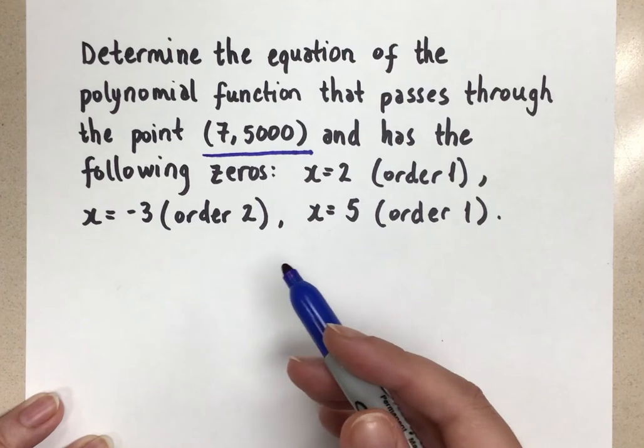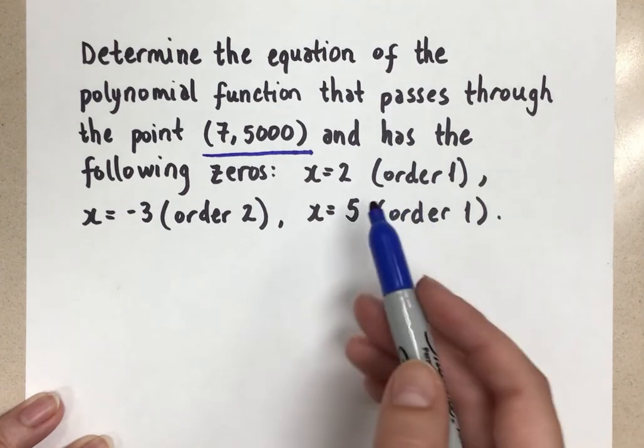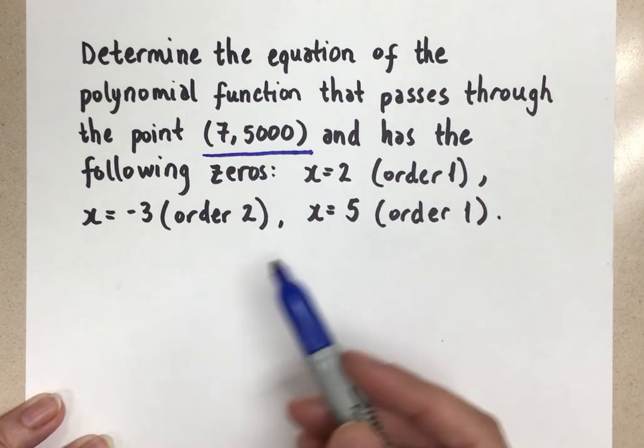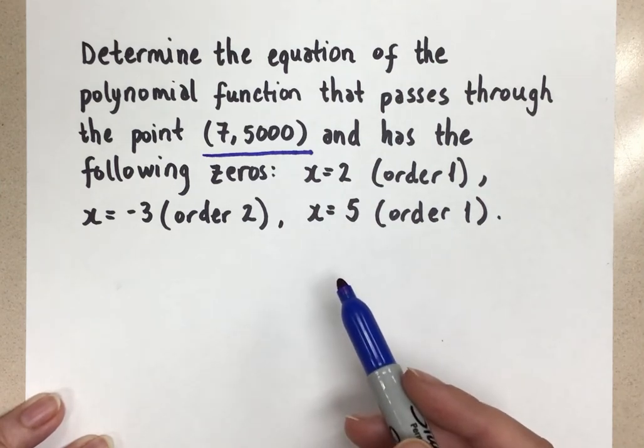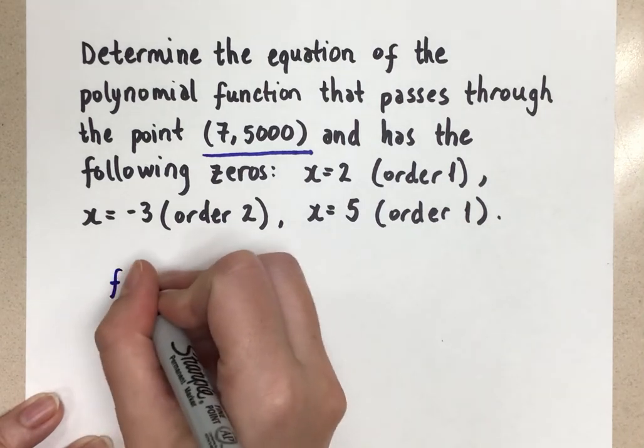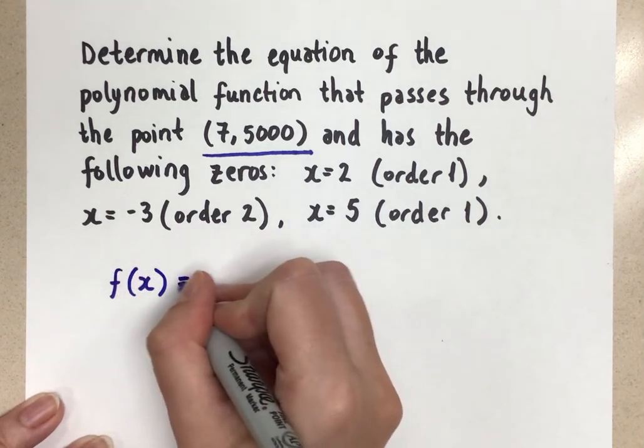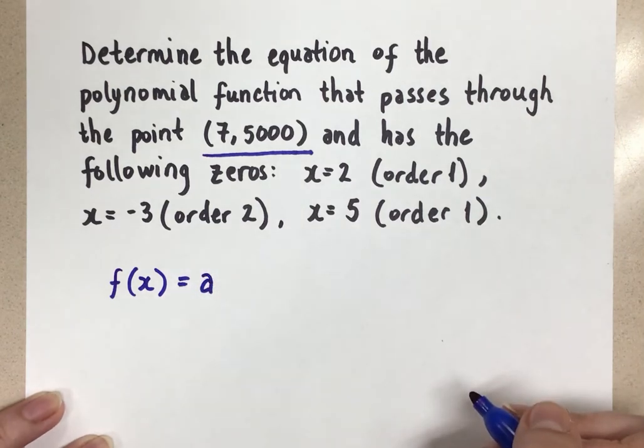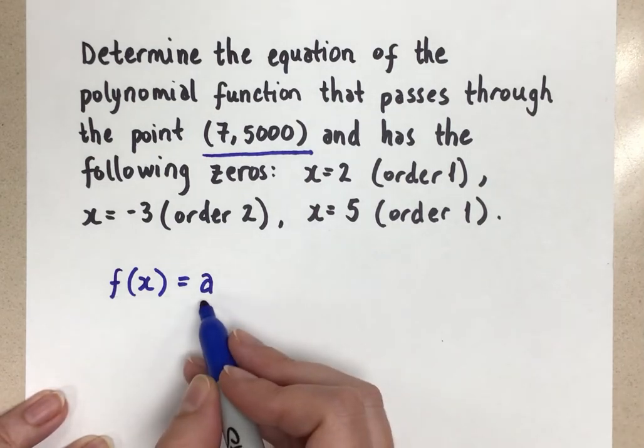So when we put this into the equation, we need to take into account the order of each of the zeros. So we're going to use factored form because we have the zeros given to us as the structure for the equation. So let's start off with our function. We're going to put a placeholder for the a value because we don't know the a value for this function. We don't know if it's positive or negative. We don't know if there's a stretch factor at all. And that is something that we need to find.